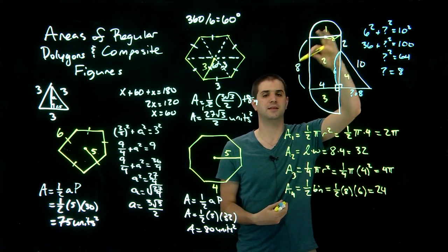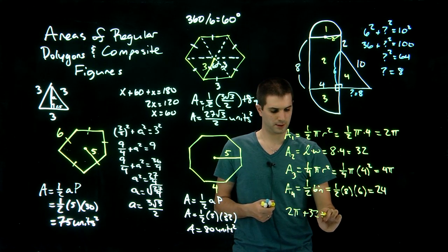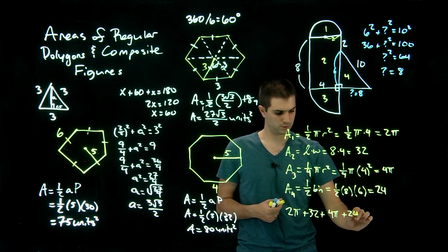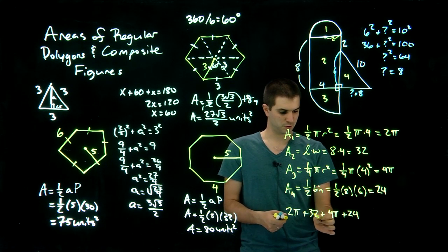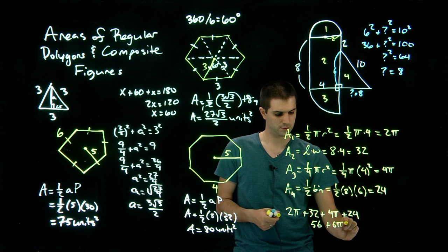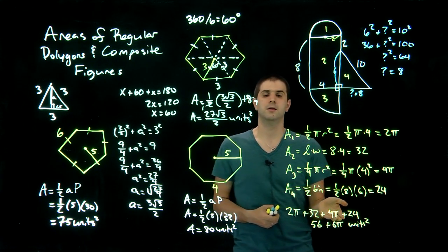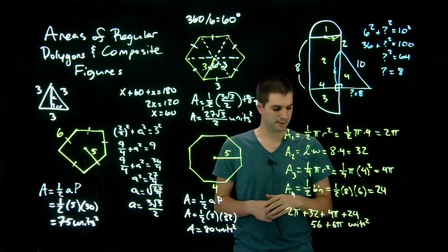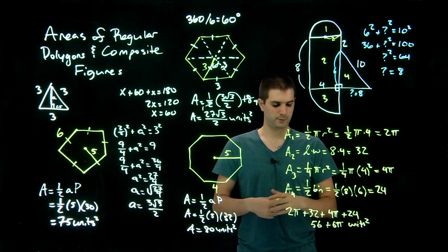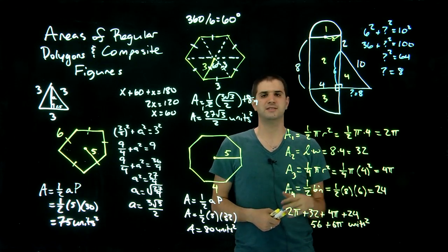Now we add all the areas together: 2pi plus 32 plus 4pi plus 24. Combining the constants: 32 plus 24 is 56, and combining the pi terms: 2pi plus 4pi is 6pi. So the total composite area is 56 plus 6pi units squared. You can use a calculator to find that 6pi is around 20. This is an acceptable answer, though your teacher may want a single decimal number. Throughout this process, hopefully you learned about finding areas of regular polygons and composite figures.